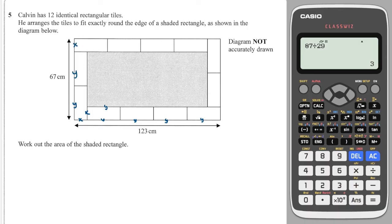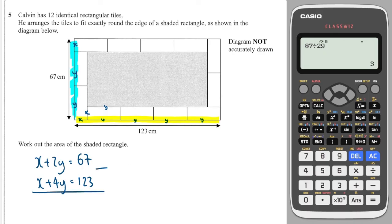And then we can set up two equations. So the first equation, we'll look along this blue line here. And that will tell us that x plus 2y is equal to 67. And then we're going to look along this yellow line here. And that tells us that x plus 4y is equal to 123. And look at that. That's a simultaneous equation. We can subtract the two equations. The bigger equation is on top, so I'm just going to subtract upwards. So it's 4y minus 2y is 2y. And 123 minus 67 is 56.